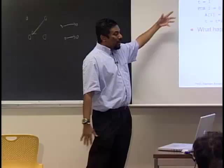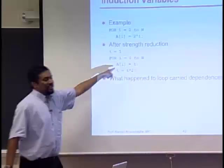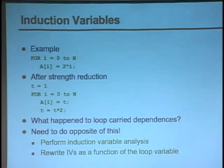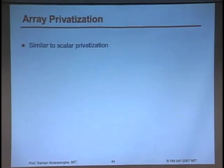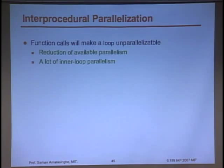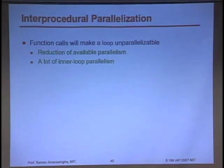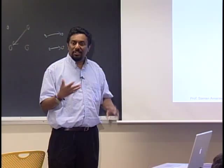Array privatization is similar to scalar privatization but for arrays — you can make private copies. Another technique is interprocedural parallelization. If you have a nice loop and in the middle there's a function call, simple analysis says: can't parallelize anything with a function call. That's a big problem because many loops call functions like sin or exp. Two options: interprocedural analysis (analyze the whole program and the function itself) or inlining. Interprocedural analysis can lead to exponential blowup if a function is used many times, so you analyze each function once and use a summary.